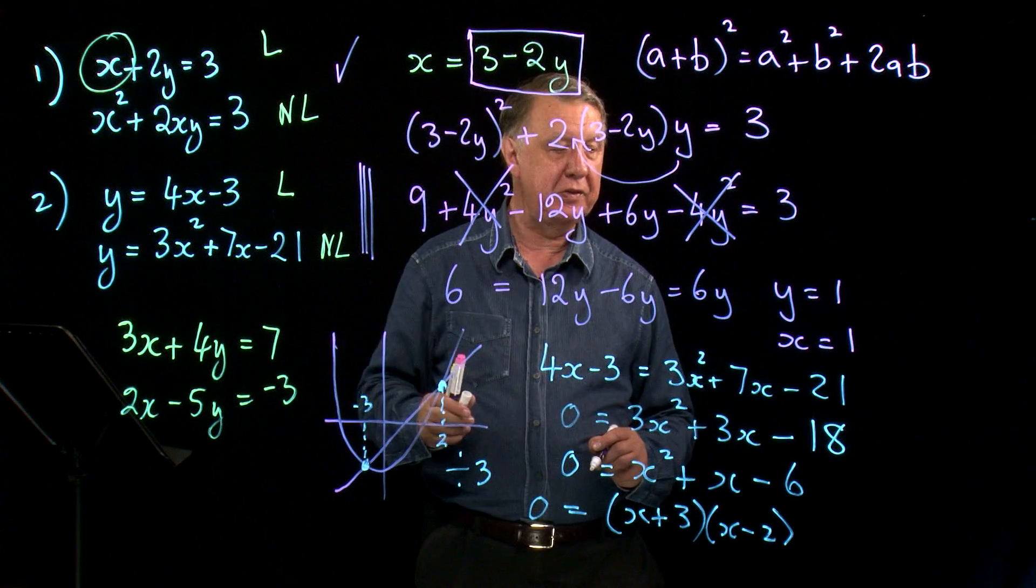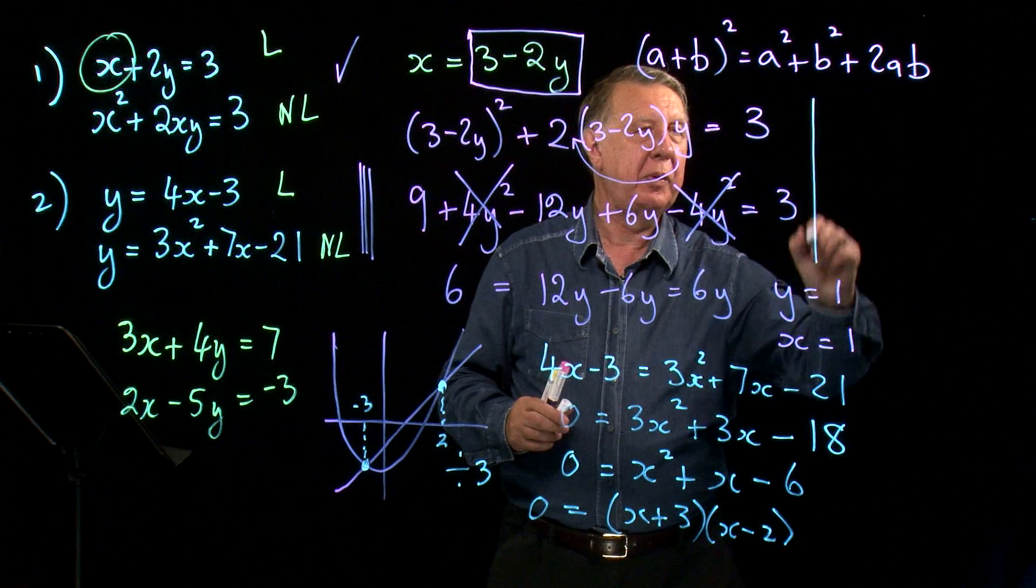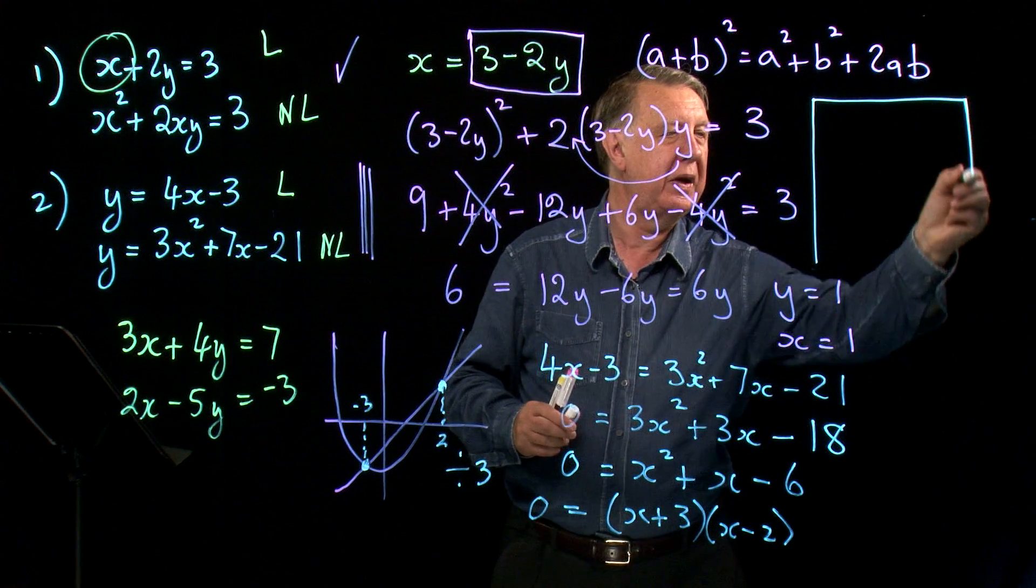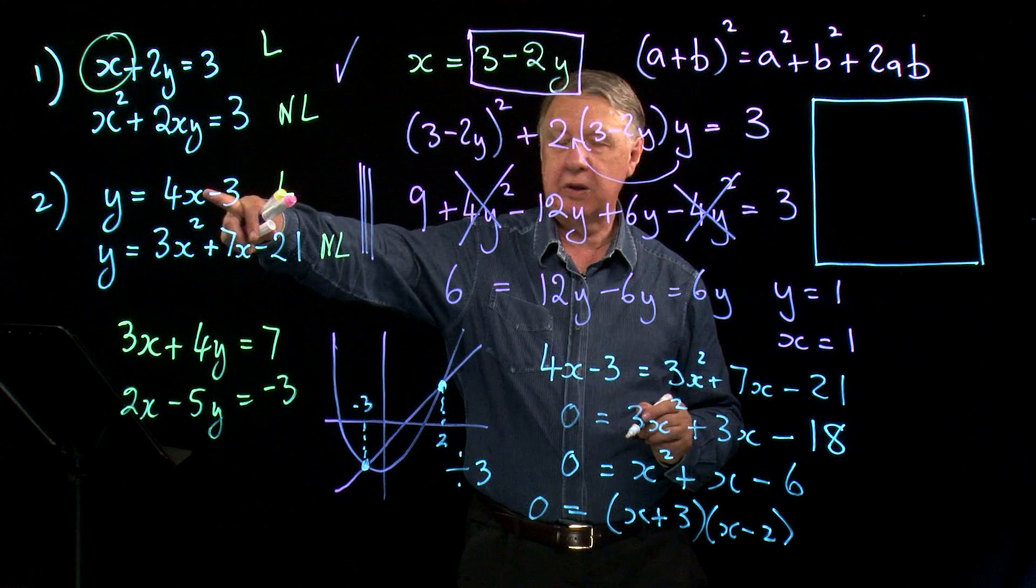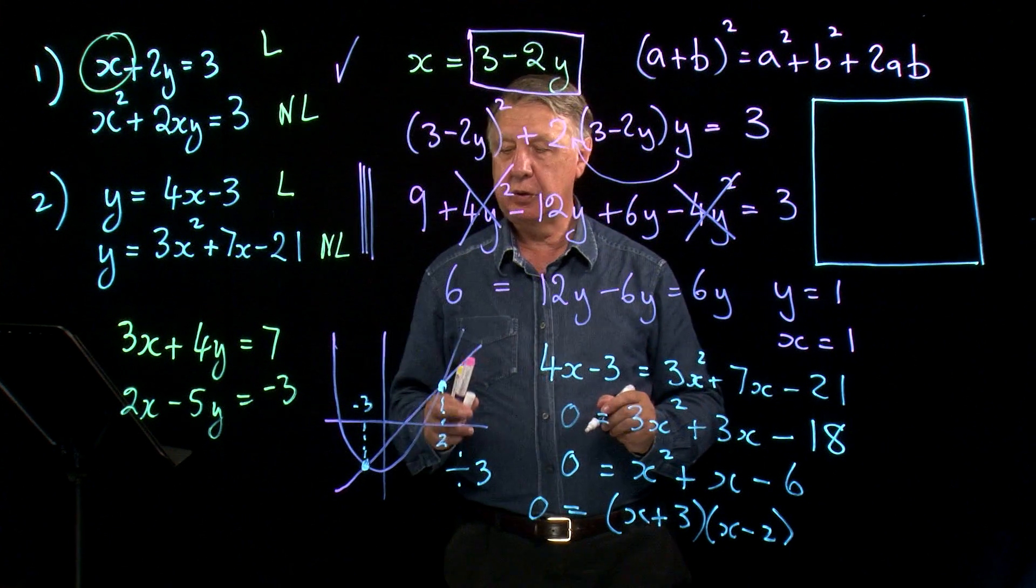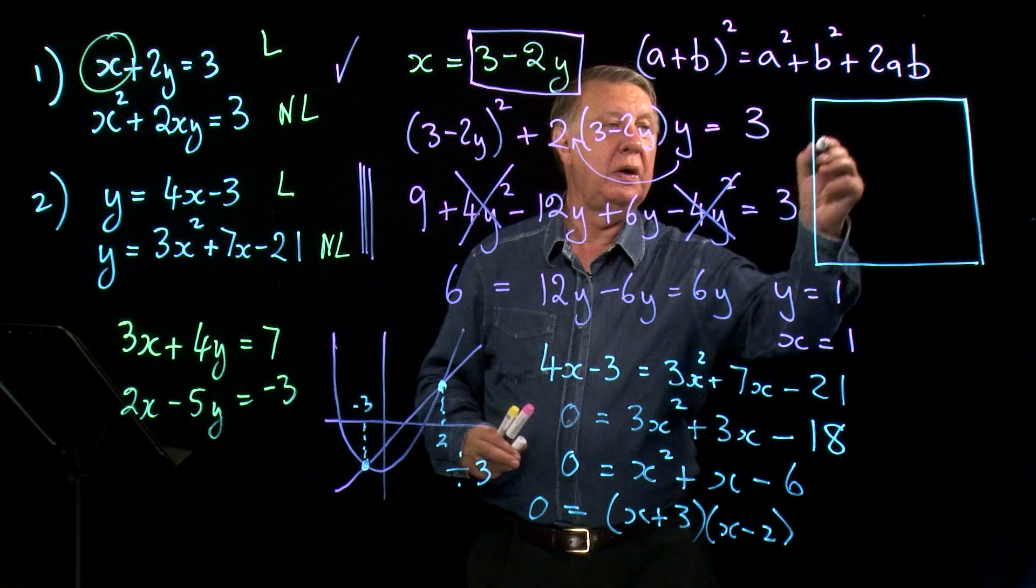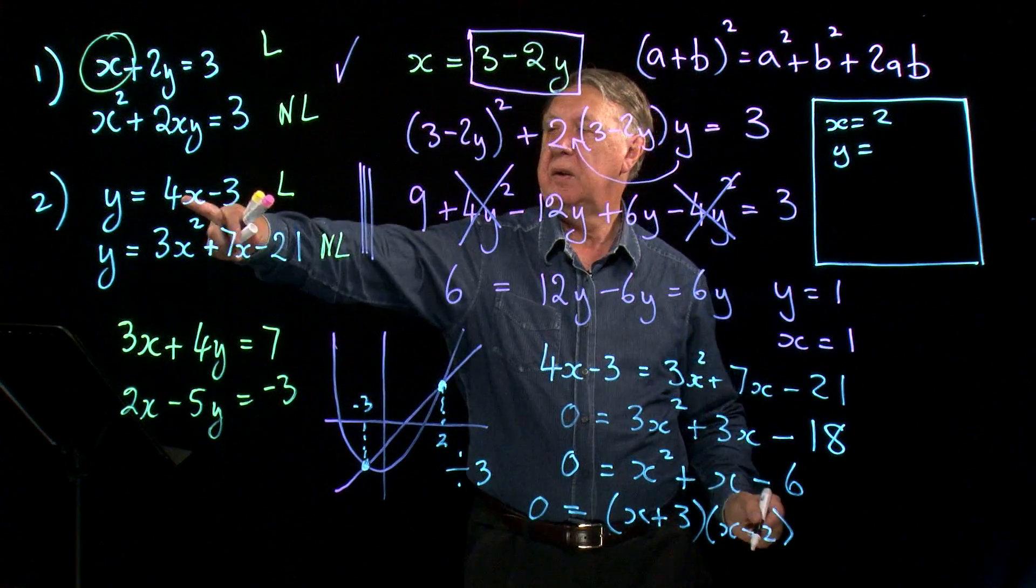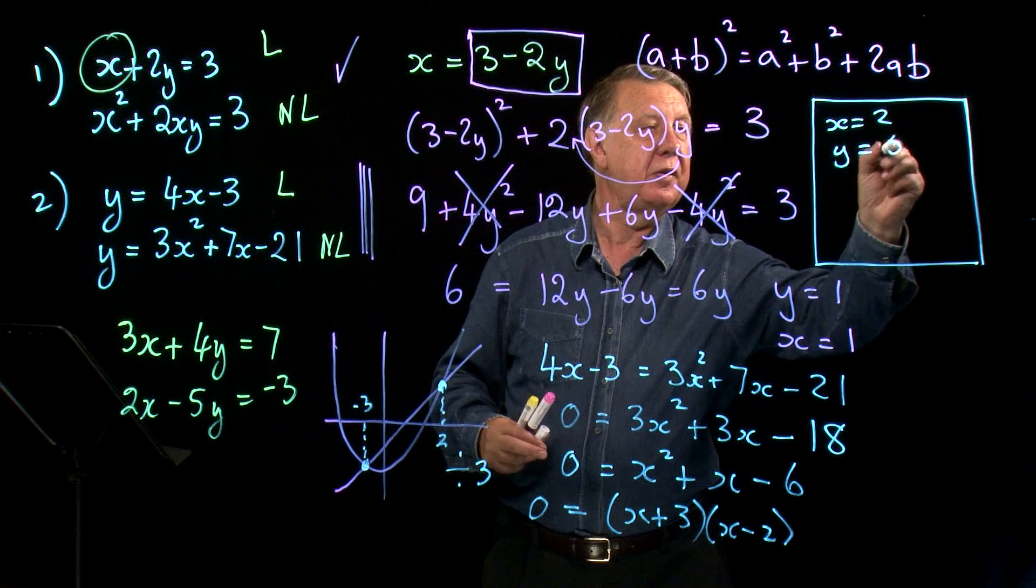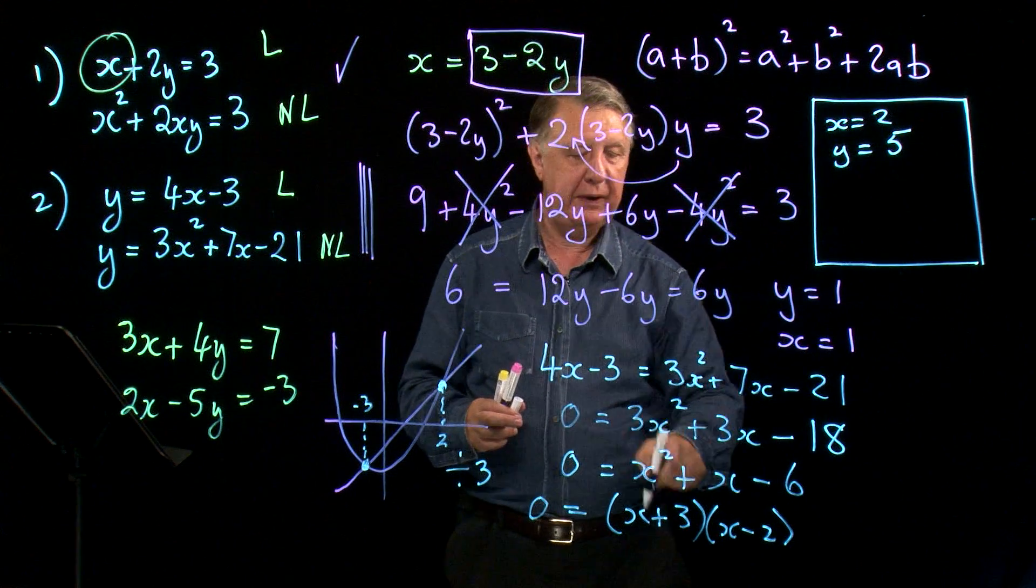So if I take the first one, because that's easier. Let's find a little bit of space up here because I'm running out of space. So if I put x equal to 2 into this one, so when x is 2, y will be 8 take away 3, which is 5.